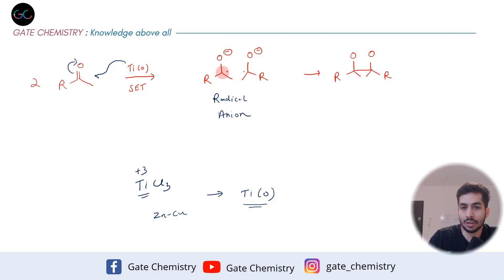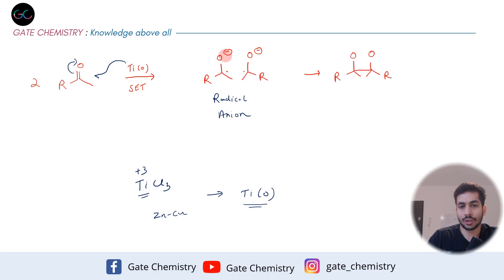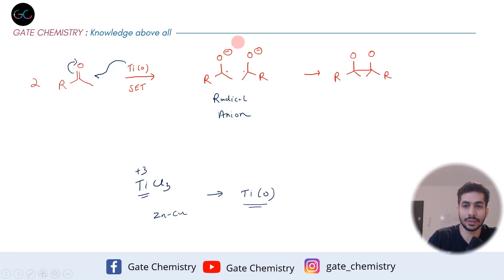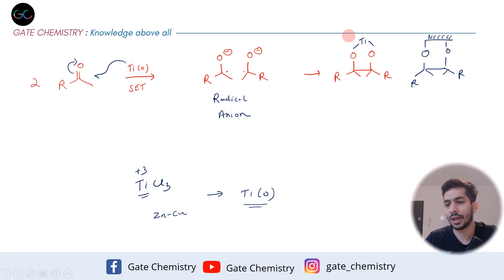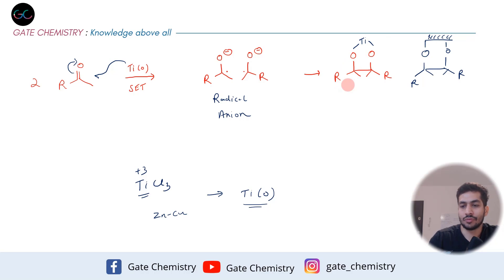Two such radical anion molecules couple together — the two radicals join to form a carbon-carbon bond. You can show this with O-minus groups free, or you can show those oxygens binding to the titanium surface. Both representations are used in different books and both are considered correct. This carbon-carbon bond formation is the key step of McMurry coupling.